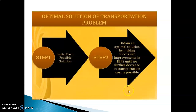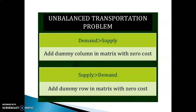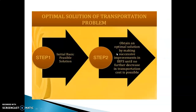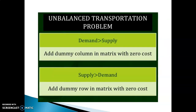For the optimum solution, we have two more methods, one of which is the Modified Distribution Method, known as the MODI method. We are going to study the MODI method. Before applying any of these methods, you first need to check whether the total supply equals total demand — that is, S1 plus S2 plus S3 equals D1 plus D2 plus D3. If supply equals demand, you can proceed to find the basic feasible solution. If demand is more than supply, add a dummy column in the matrix with zero cost. If supply is greater than demand, add a dummy row in the matrix with zero cost.